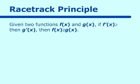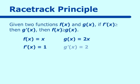Let's say we have the function f of x equal to x, and g of x equal to 2x. We know that f prime equals 1 and g prime equals 2. We know that g of x equals 2x is greater than f of x equals x when x is greater than zero. In the race track principle, we need a starting point — in this case it is at zero — and g prime of x is greater than f prime of x when x is greater than zero.